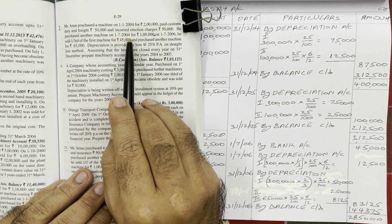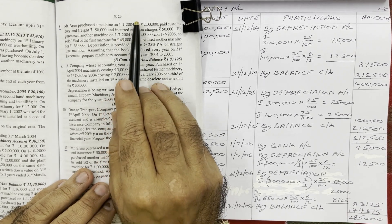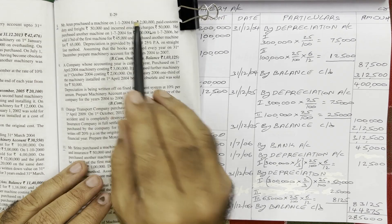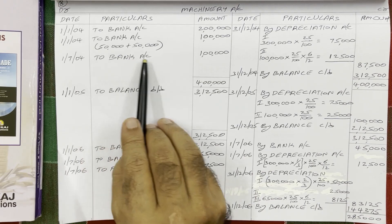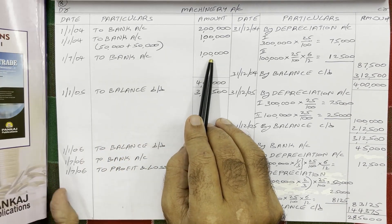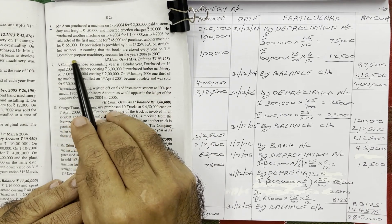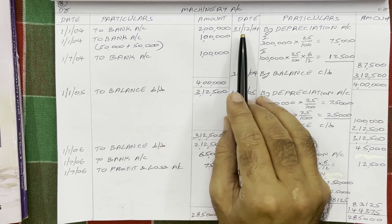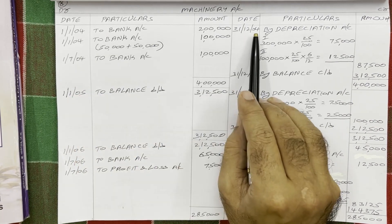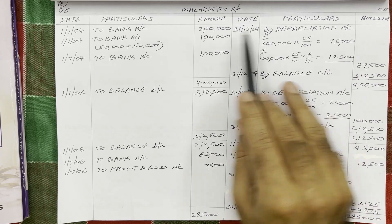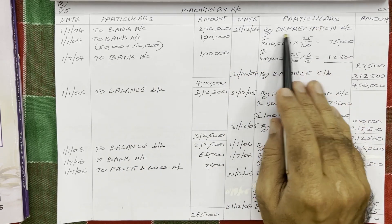Continuing: he purchased another machine on 1st July 2004 for 1 lakh rupees — that also comes in this year. So on 1st July 2004, to bank account: 1 lakh rupees. Every year accounts are closed on 31st December, so the year-end date is 31st December 2004. On that day, both assets are in use, so depreciation will be shown on the credit side.